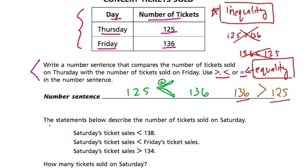Now here it says the statement below describes the number of tickets sold on Saturday. So we're going to use these three clues. And they're going to say to us how many tickets were sold on Saturday. So it says that Saturday's ticket sales are less than 138. We can read this as less than 138 because the way the symbol is facing. So whatever number it is, it's less than 138.